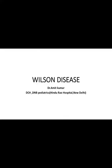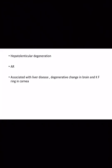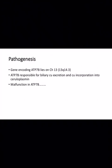We will discuss Wilson disease. Wilson disease is also known as hepatolenticular degeneration. It is inherited as an autosomal recessive condition associated with liver disease, degenerative changes in the brain, and KF ring in the cornea.